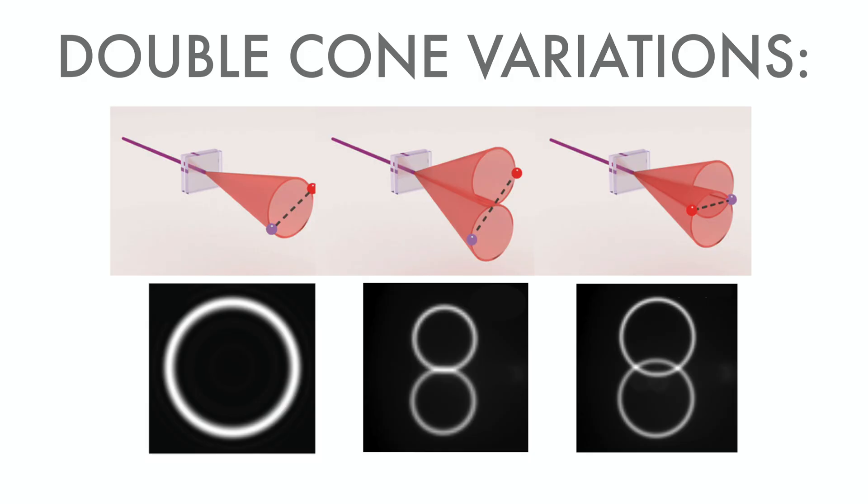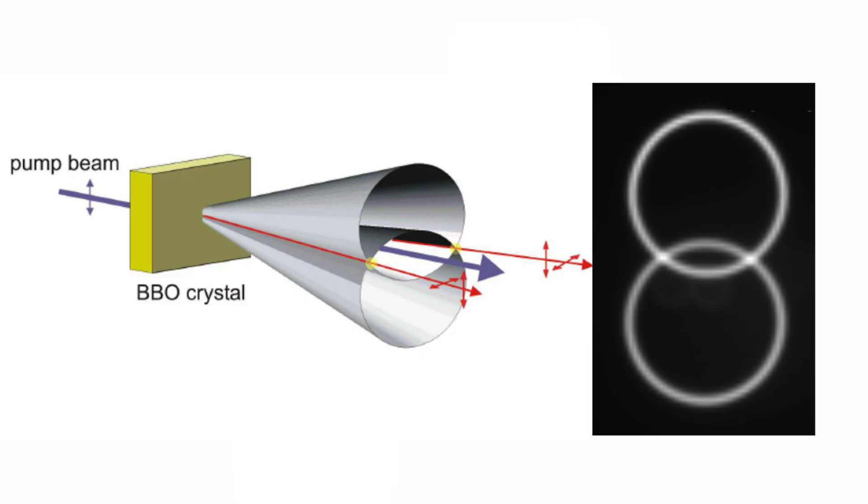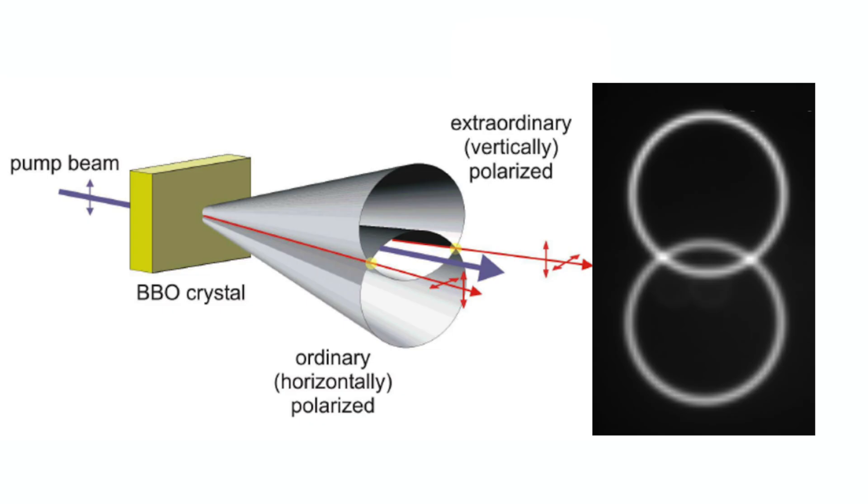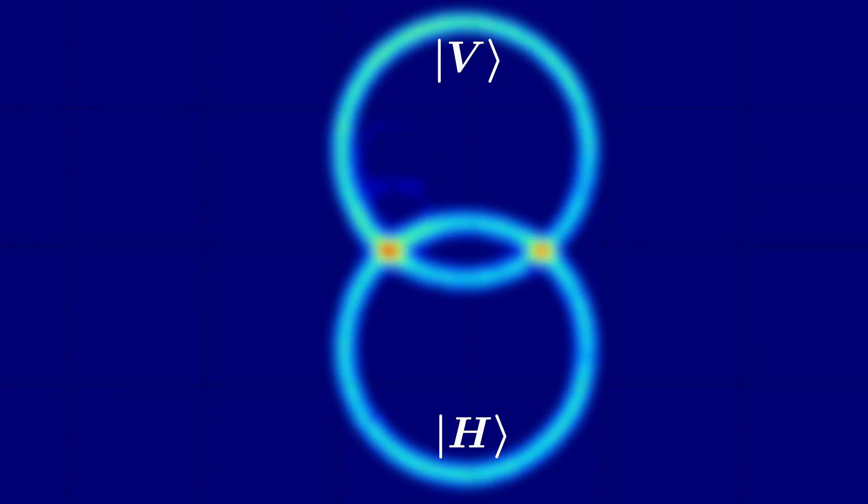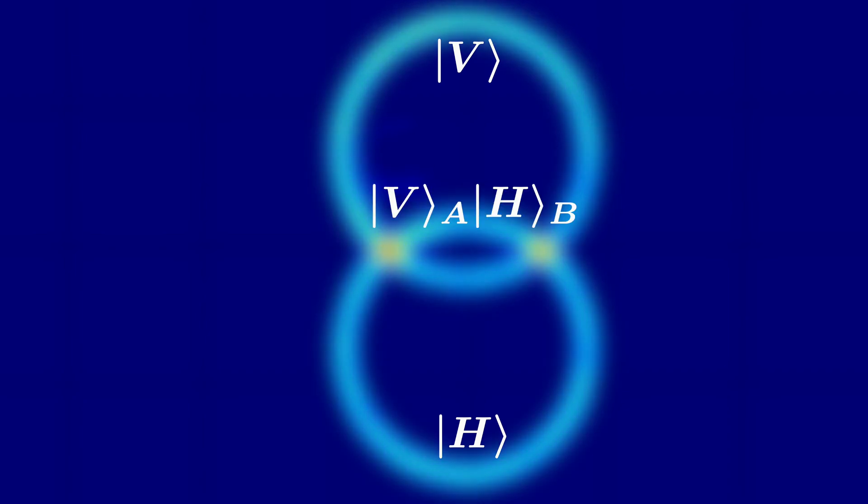You can fix the directions of the cones by the properties of the crystal, by the angle of the laser light, etc. And when we get the two cones to intersect, we create a very interesting situation. The two photons from the intersecting points must be correlated. One must be horizontal and the other vertical. But as they lie on the intersections of both cones, they could be either, as long as they are always the opposite. When we write down this state, this is either photon A vertical and photon B horizontal, or the other way around. And both are equally likely.